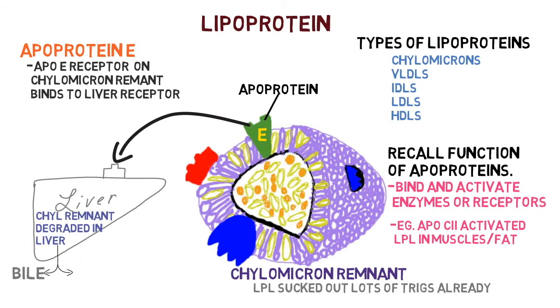And what happens then? The liver makes either bile or other molecules — it needs that chylomicron remnant to do so.